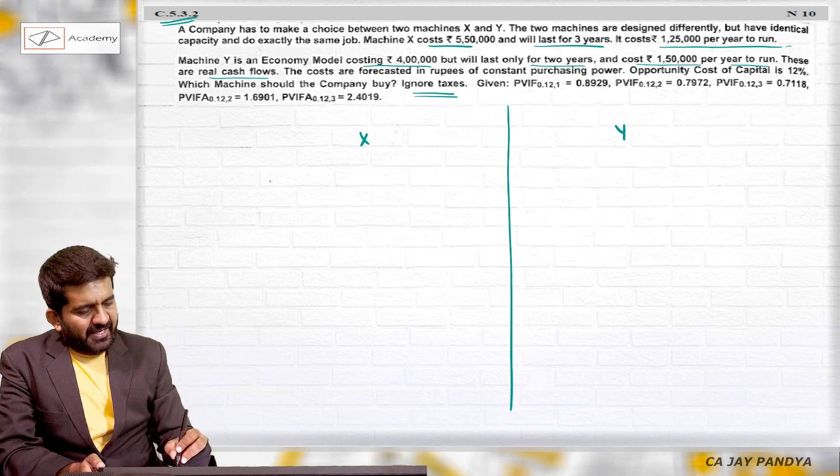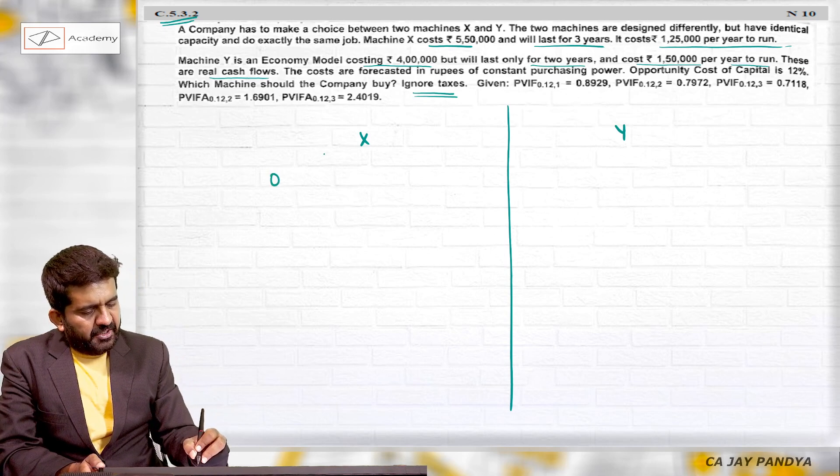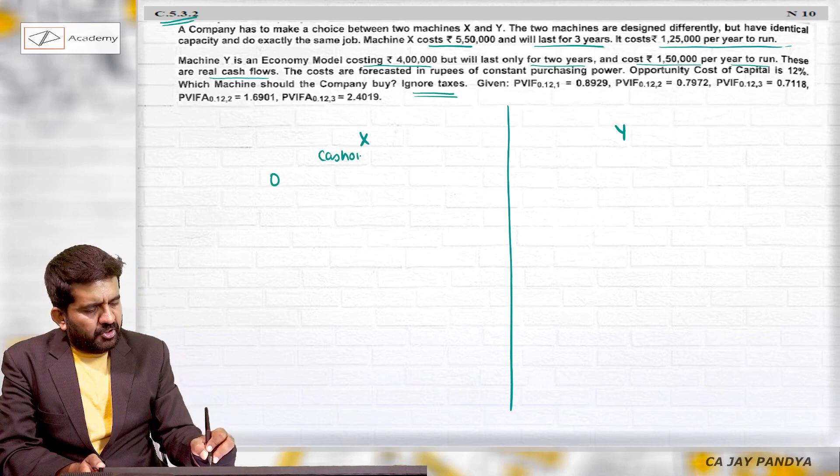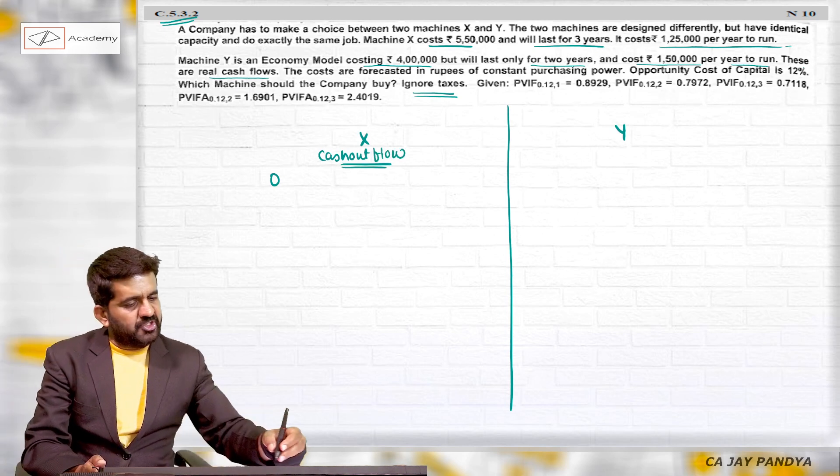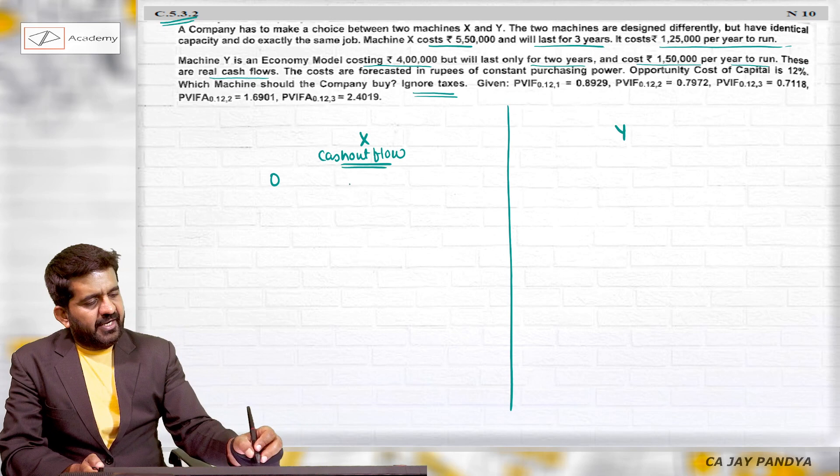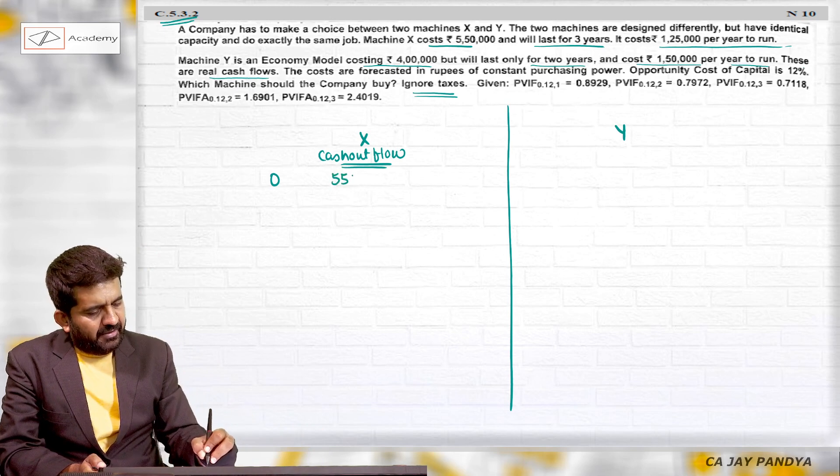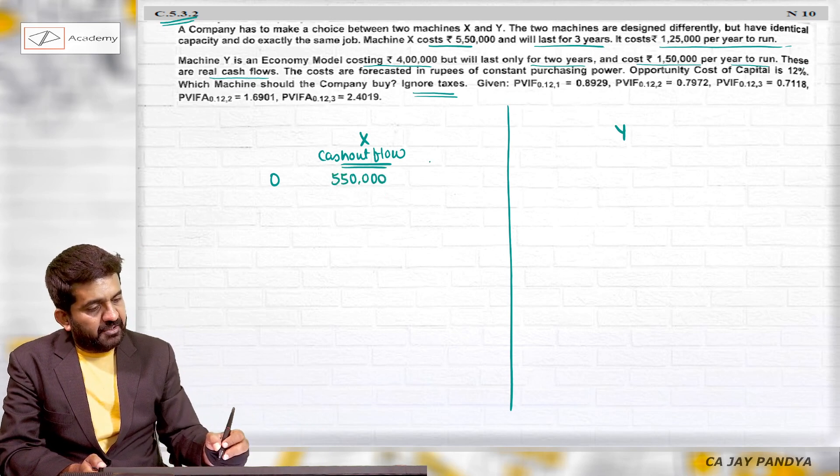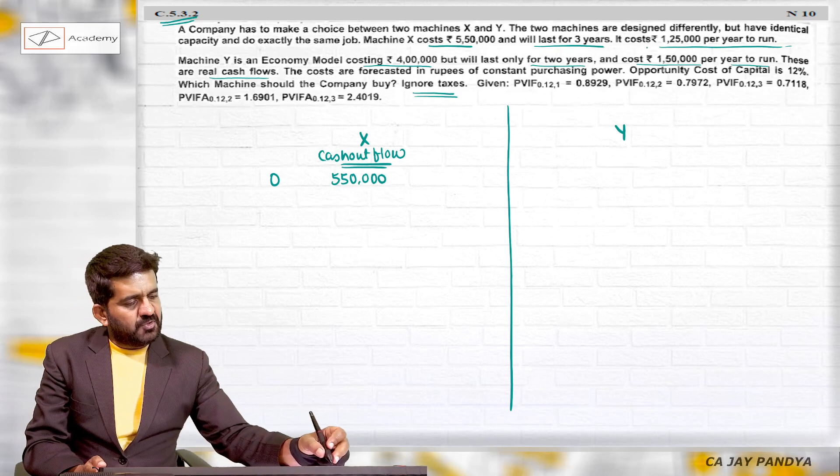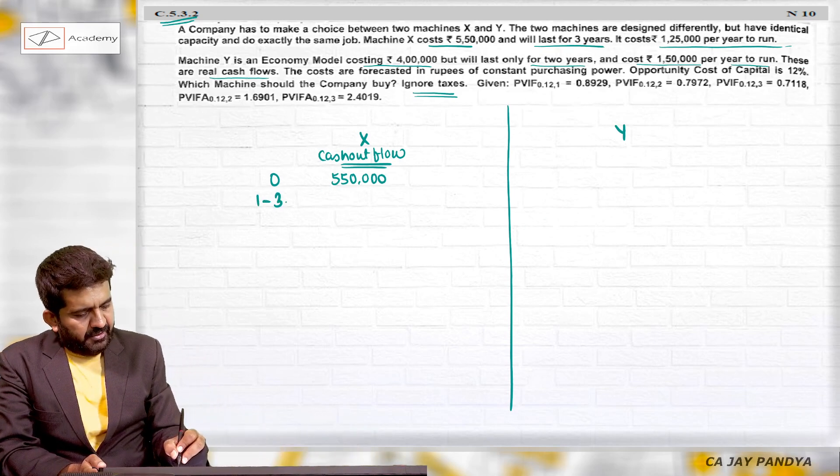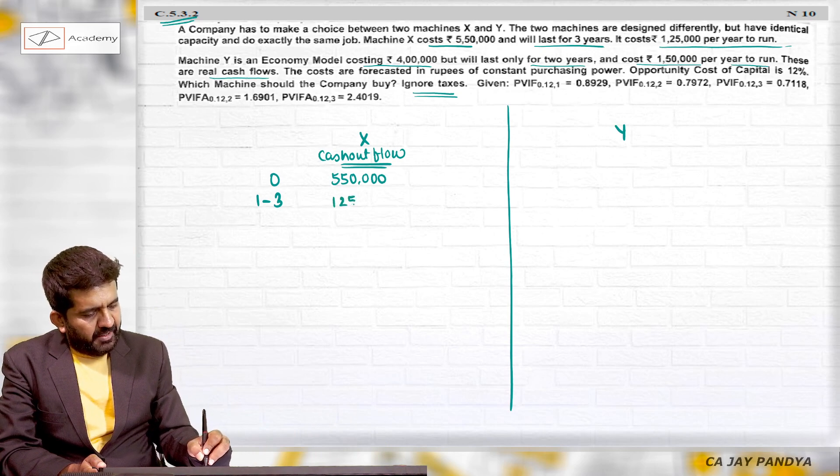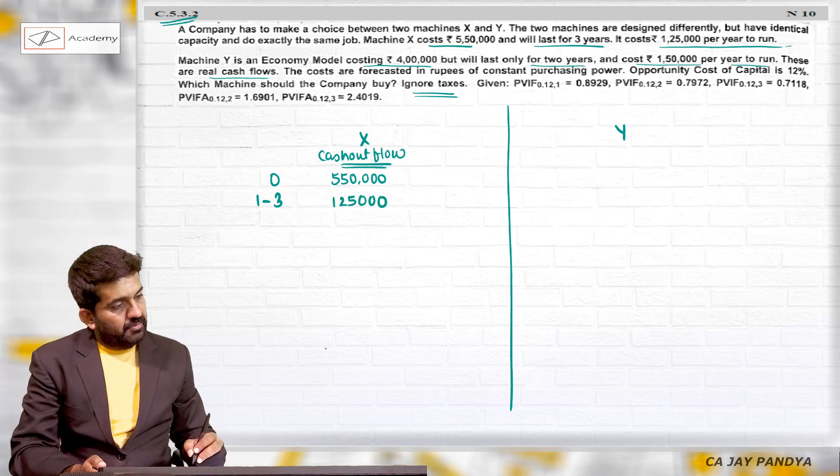If I buy Machine X at the end of year zero, I'm talking about cash outflows so I will write down positive figures. What is the outflow at the end of year zero? I will have an outflow of 5 lakh 50,000. It will last for three years and costs 1 lakh 25,000 per year to run - 1 lakh 25,000.